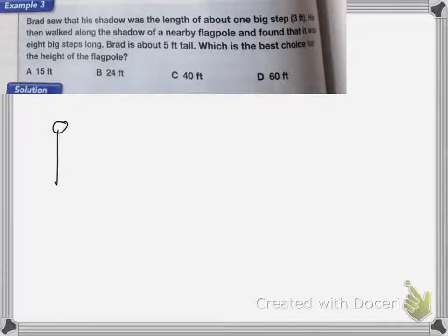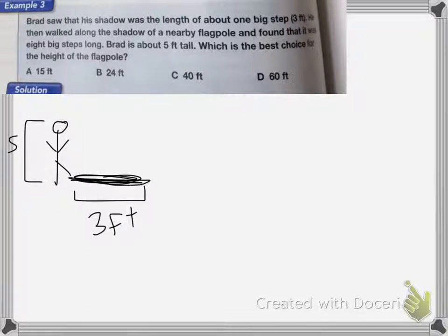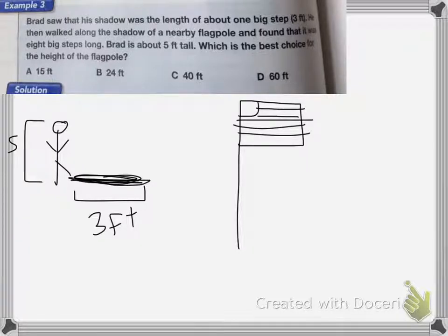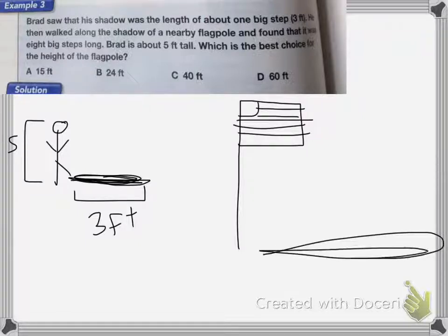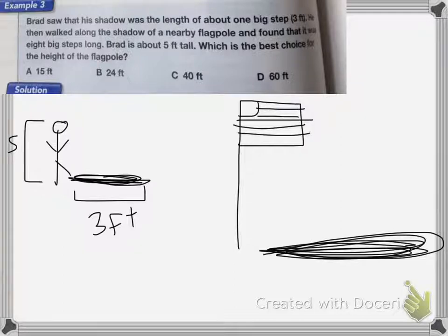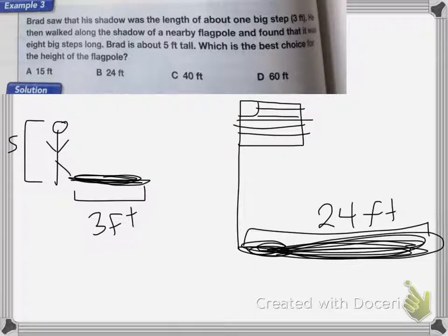So if I have Brad here and he's 5 feet tall and his shadow is 3 feet long, he's nearly twice as tall as the length of his shadow. So if my flagpole casts a shadow that was 8 big steps long, which was about 24 feet, because it would be 8 times 3 steps, so the shadow of the flagpole is 24 feet long. So the height of the flagpole should be about twice the height of the shadow, because that's what we found out with Brad here. So 2 times 24 is about equal to 40 feet. So the closest will be 40 feet.